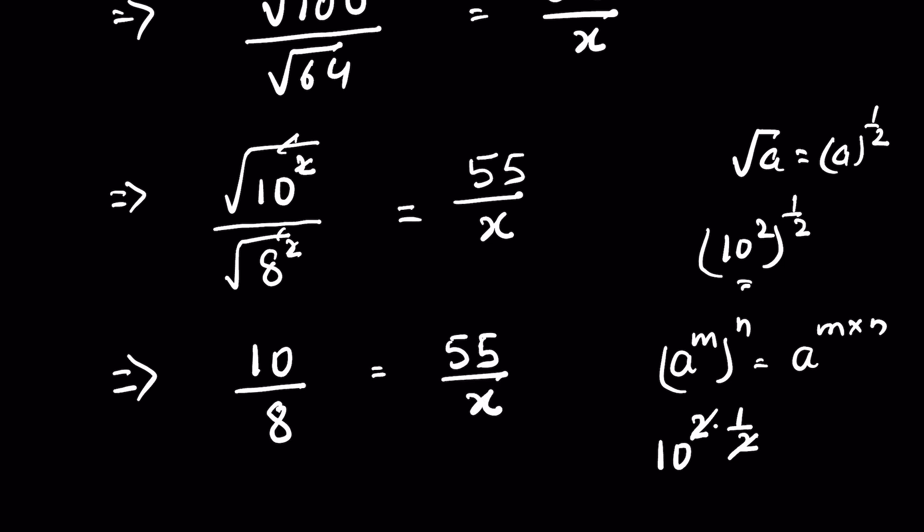We can cross multiply it, so x will multiply it to 10, so this becomes 10x. X is in numerator, so it will be in the numerator, 10x, and 8 from this side in the denominator becomes the numerator.